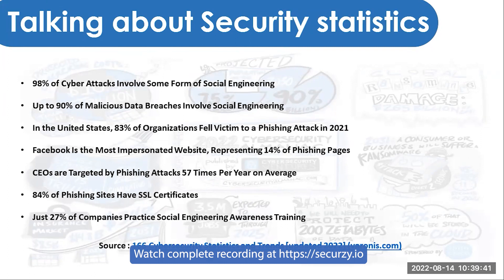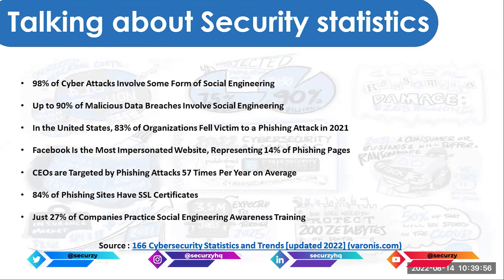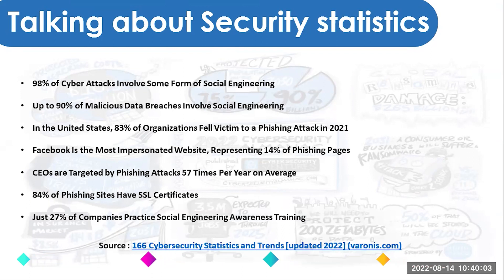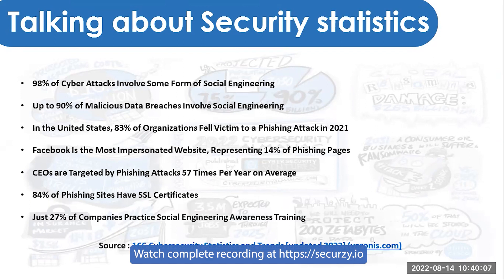Attackers target interesting targets — CEOs, executives, even celebrities. Their accounts and online businesses are always targeted. One statistic shows they can be targeted up to 57 times per year, which translates to roughly one or two attacks per week. That's a huge number.